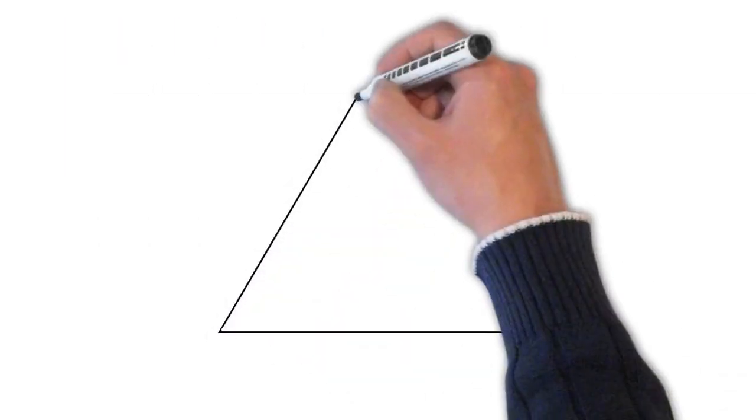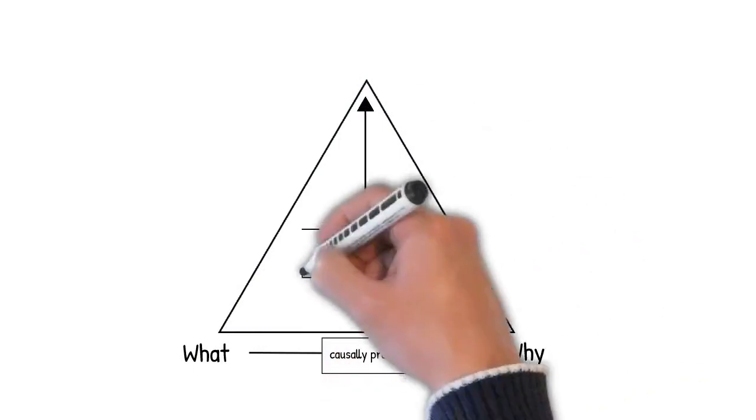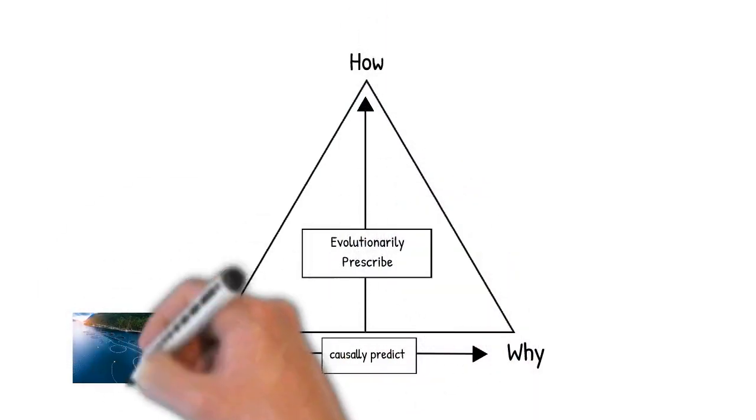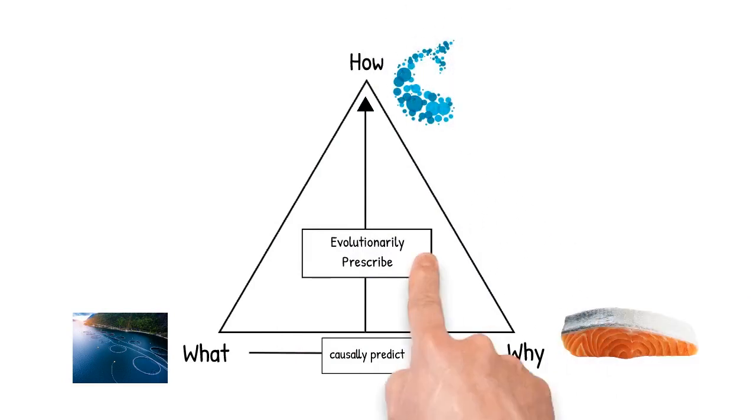There's a simpler way to look at this. Start with a what, which leads to causally predicting the why. Then, the how is achieved through evolutionary prescriptions. In our example, the salmon farms are what, the fat salmon are the why, the prescriptions are the how we evolve and test our digital salmon.